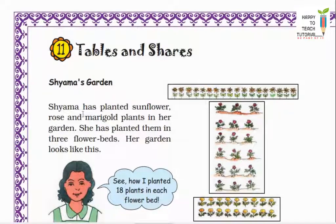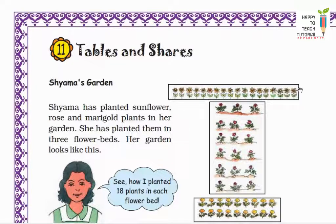Shama has planted sunflower, rose and marigold plants in her garden. She has planted them in three flower beds. We can see in this picture also - this is sunflower plants, this is rose plants and this is marigold plants. Now she tells us that she planted 18 plants in each flower bed. So in each flower bed there are 18 plants. That means 18 sunflowers are there, 18 roses are there and 18 marigolds plants are there.